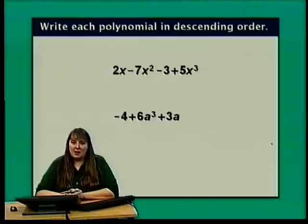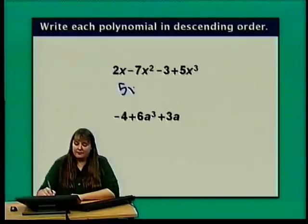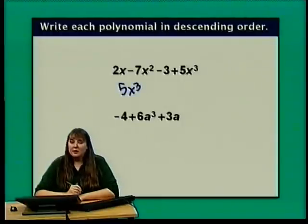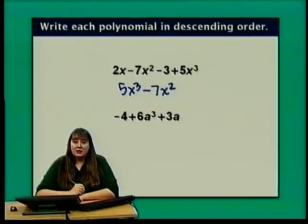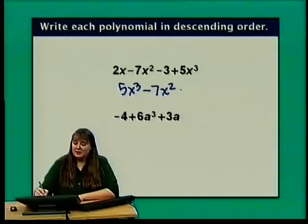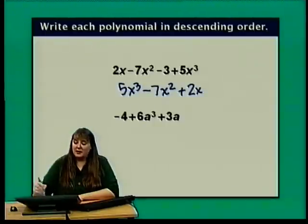Let's practice writing polynomials in descending order. For 2x minus 7x squared minus 3 plus 5x cubed, the highest degree term is 5x cubed, so we start with that. Then negative 7x squared, then 2x — sometimes called the linear term — and finally the constant negative 3. So in descending order: 5x cubed minus 7x squared plus 2x minus 3.